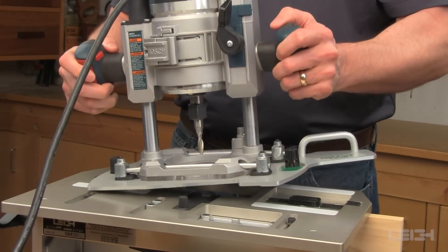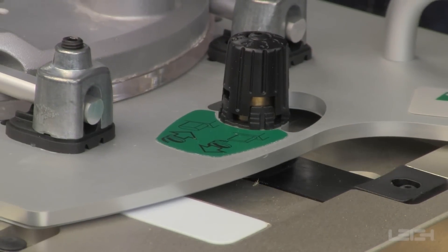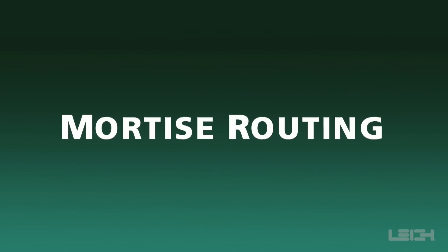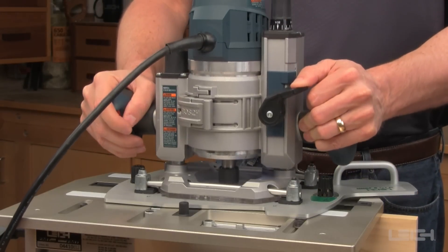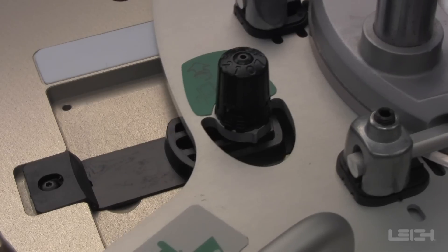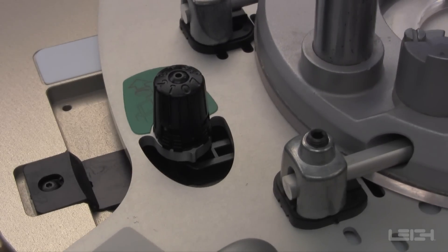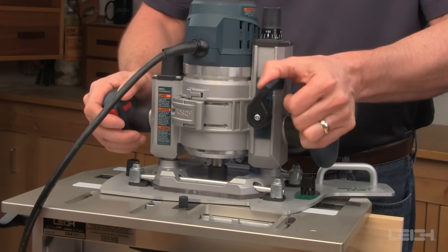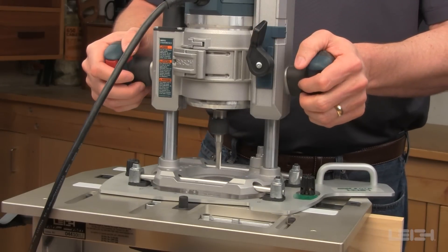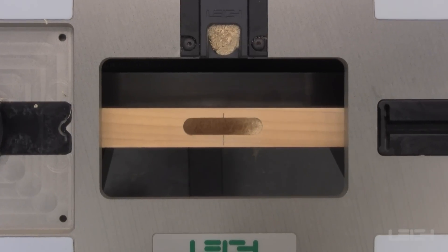The left hand guide pin now sits in the mortise slot of the guide. Plunge the router and route the mortise, making sure the guide pin is run clockwise against both the front and rear of the mortise guide slot. The matching mortise is now complete.